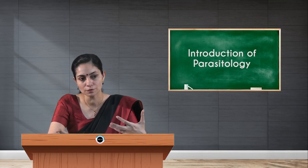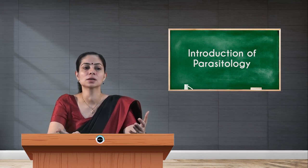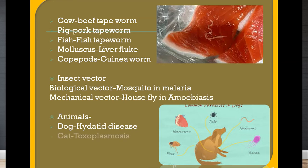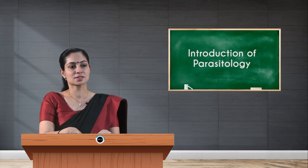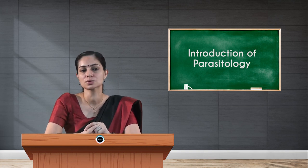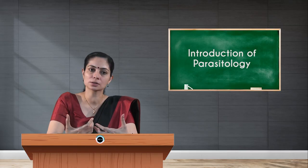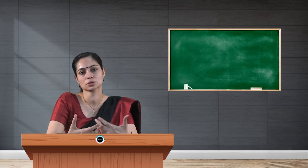Animals are another source of infection. Close contact with an infected dog can lead to hydatid disease caused by Echinococcus granulosus. Similarly, close contact with an infected cat can cause toxoplasmosis, caused by Toxoplasma gondii. The last source of infection is auto-infection. These are the different sources of parasitic infection — I will continue with the next video. Thank you.